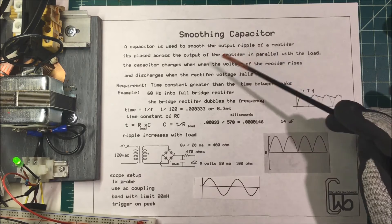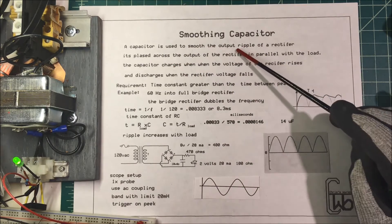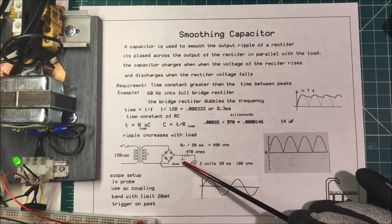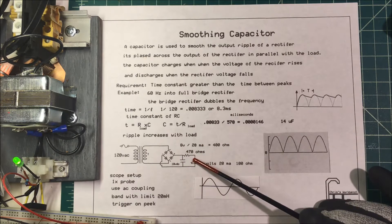Let's talk about smoothing capacitors. A capacitor is used to smooth out the output ripple of a rectifier. It's placed across the output of the rectifier in parallel with the load.